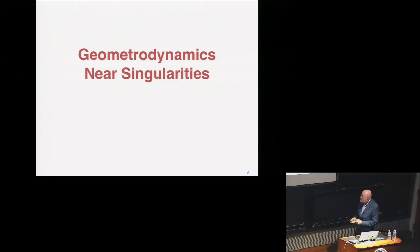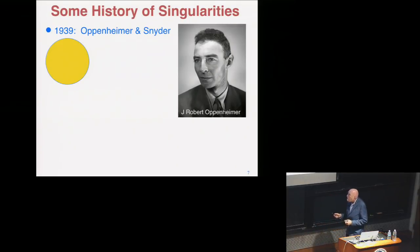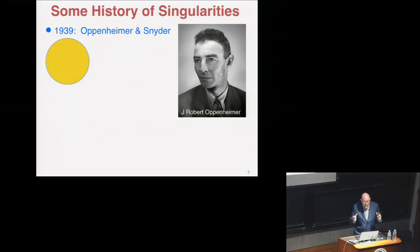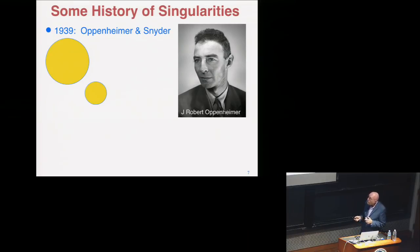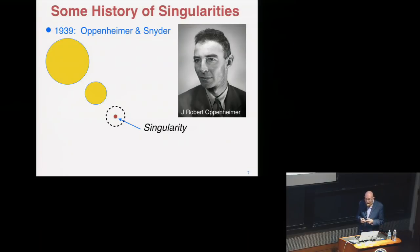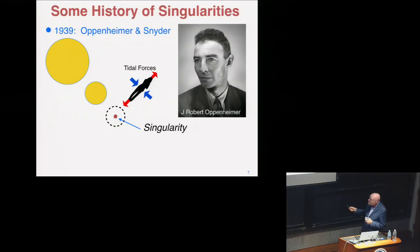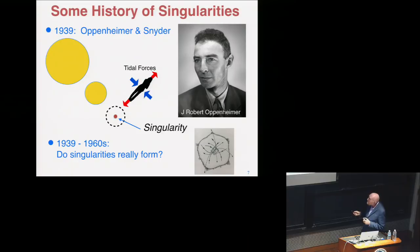Geometric dynamics near singularities goes back to Robert Oppenheimer and his student Hartland Snyder in 1939. Trying to understand what would happen if a star imploded, they did the idealized problem of a spherical, spatially homogeneous cloud of dust that implodes and forms what we now call a black hole. They watched it implode analytically to form a singularity at the center, surrounded by a horizon — though they didn't fully understand either at the time.